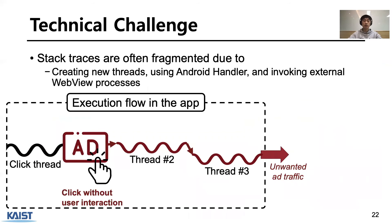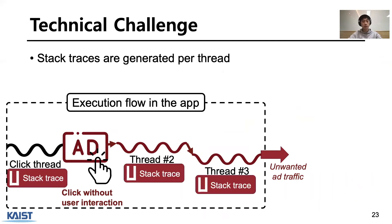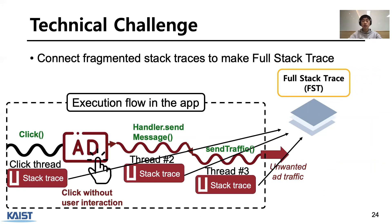However, a Stacktrace for fraud activity is often fragmented due to the usage of multiple threads, Android handlers, and external processes. Because Stacktrace information is generated per thread, if the thread where the interaction occurs and the thread generating ad traffic are different, we need to combine the fragmented Stacktraces. We connect the fragmented Stacktrace by modifying every source code related to thread invocation in AOSP. We call this combined Stacktrace the full Stacktrace.